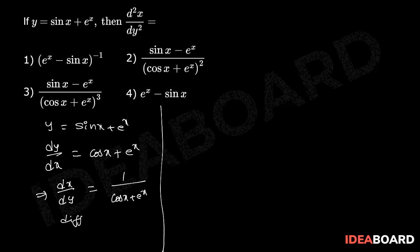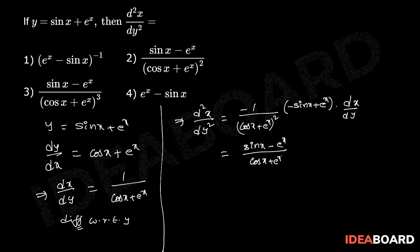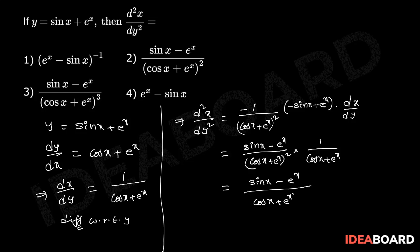Differentiating with respect to y, d square x by dy square equals minus 1 by cos x plus e power x whole square, into the internal function derivative which is minus sin x plus e power x, into dx by dy. That equals sin x minus e power x divided by cos x plus e power x whole square, into dx by dy, which is 1 by cos x plus e power x. That equals sin x minus e power x divided by cos x plus e power x whole power 3.